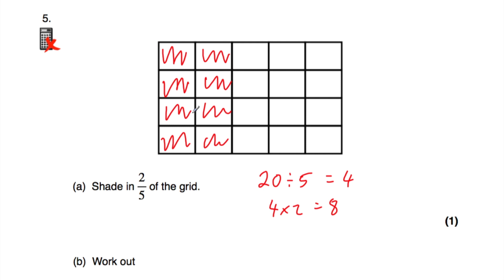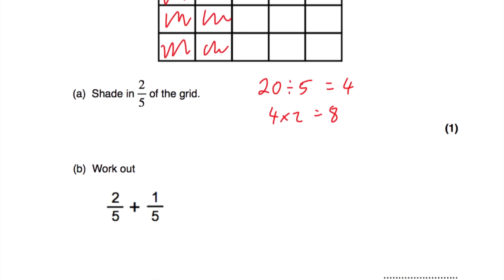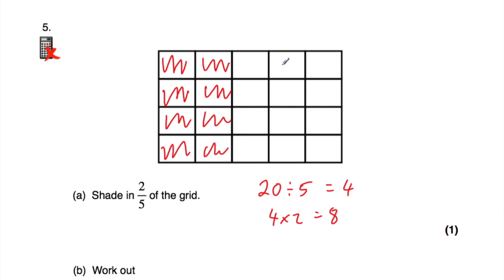Question A was to shade in two fifths of the grid: we shaded in two of the five columns, that's two fifths, or we could shade in eight of the boxes. Question B says: work out two fifths plus one fifth. Two fifths plus one fifth equals three fifths — you do that by adding the numerators: two plus one is three, so it's three fifths. Alternatively, using the grid, we had two columns shaded, and if we shade in one more column, that gives us three fifths, because each column is a fifth.